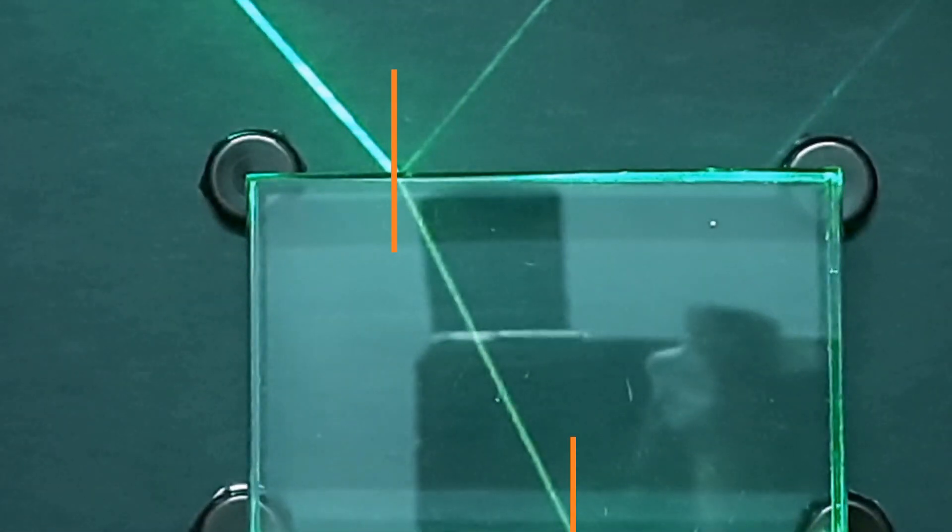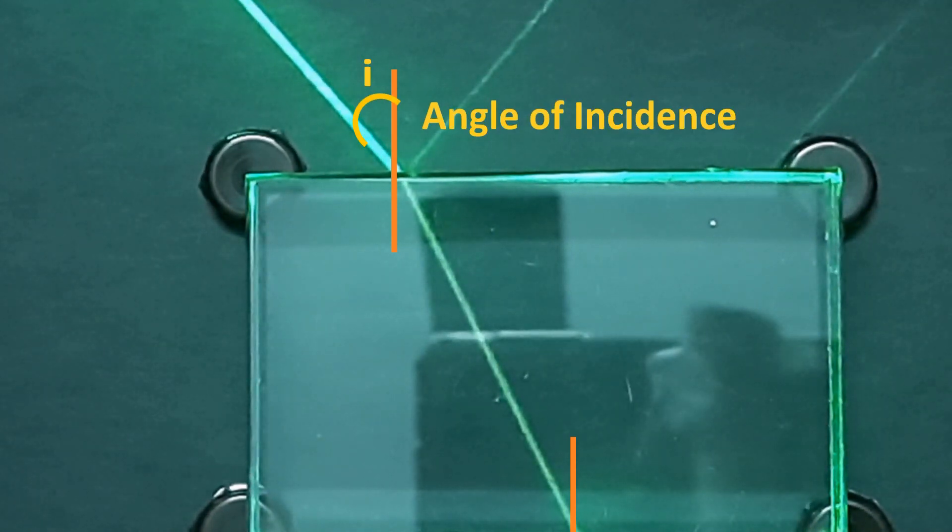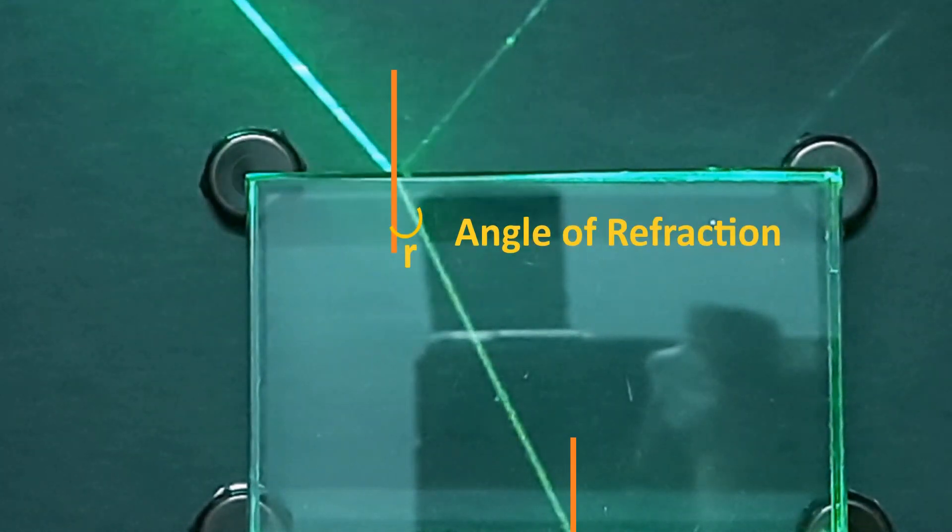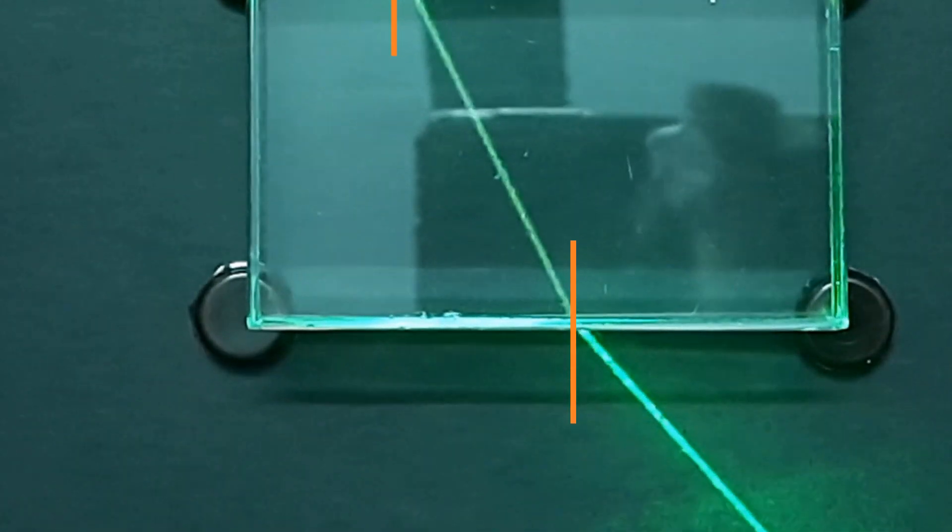The angle between the incident ray and the normal is known as angle of incidence. Similarly, the angle between refracted ray and normal is known as angle of refraction, and angle between emergent ray and normal is angle of emergence.